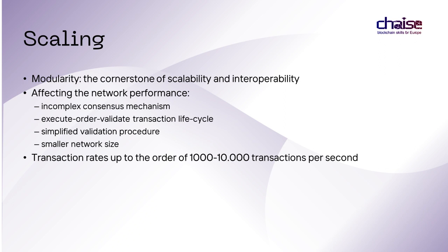There is a dedicated performance and scaling working group in Hyperledger. Because of the modular nature of HL Fabric, application complexity, and hardware processing capability, it is challenging to compare performance of specific HL Fabric networks. Some researchers report transaction rates in the order of 1,000 to 10,000 transactions per second. The key reasons for clearly outperforming major permissionless public networks include the uncomplicated consensus mechanism, execute-order-validate transaction lifecycle, simplified validation procedure, and smaller network size.